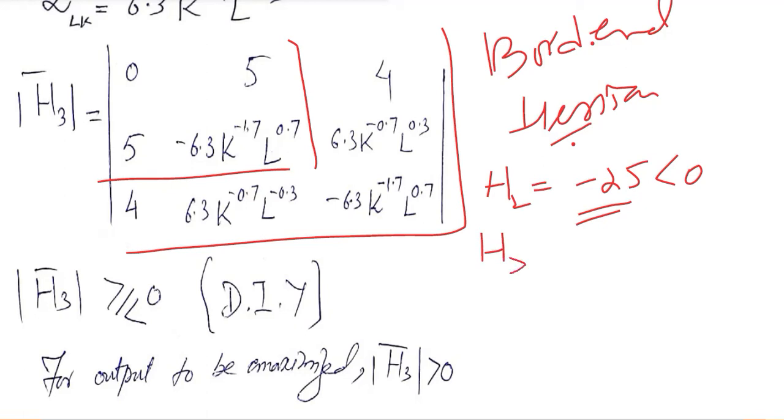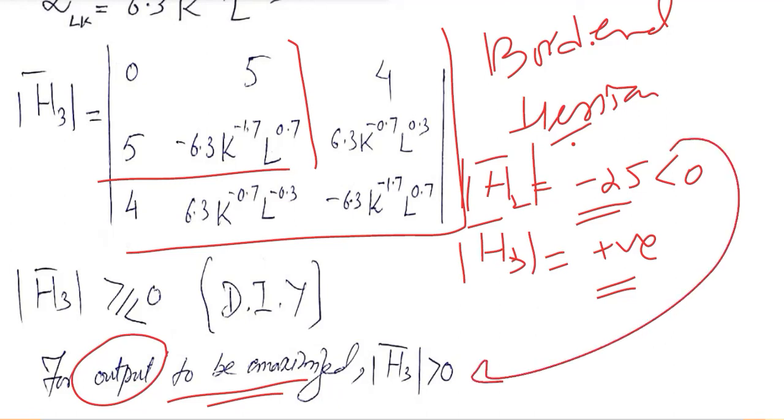The final, that is H3, the principal minor, the third one, should be now with an alternative sign, should be a positive value. So that when the alternative signs appear in the bordered Hessian determinant, there would be maximization. In this case, it is the maximization of output. So we have already found that H2 is negative and H3 should be positive.